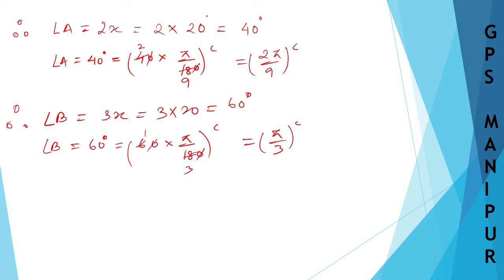Now let us see angle C, which will be 4x. We have found x to be 20, so 4 times 20 is 80 degrees. Angle C is equal to 80 degrees. Converting this into radians: 80 into π by 180.